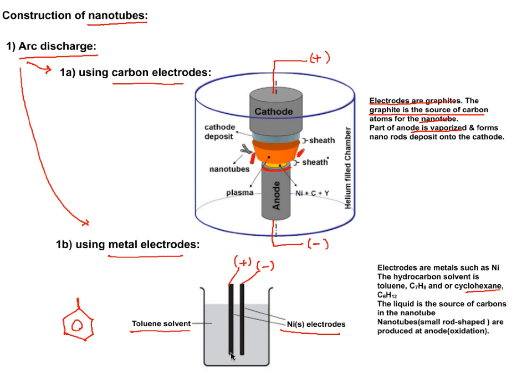These two electrodes are close to each other. Once connected to electricity, there will be a spark, an arc, and the toluene is going to decompose. At the anode, you're going to produce this rod-shaped structure of nanotubes.